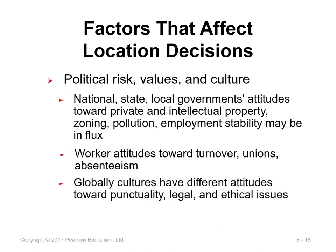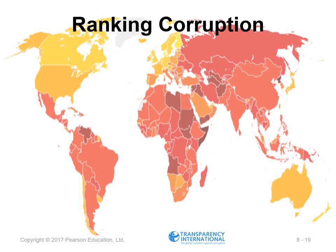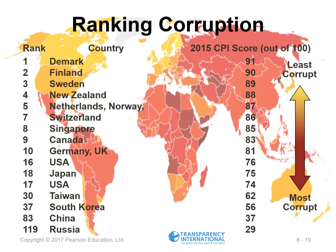Another challenge in global operations decisions is dealing with another country's culture. Cultural variation in punctuality by employees and suppliers makes a marked difference in production and delivery schedules. Bribery and other forms of corruption also create substantial economic inefficiency as well as ethical and legal problems in the global arena. A ranking of corruption in countries around the world shows Denmark as the least corrupt and Russia as the most corrupt.